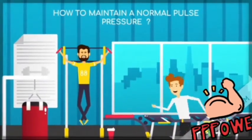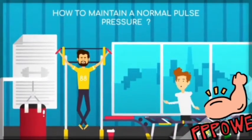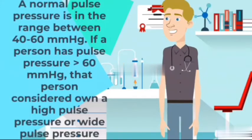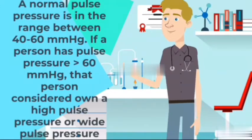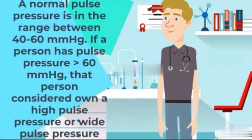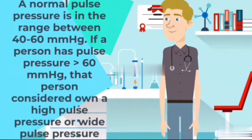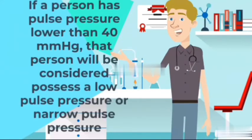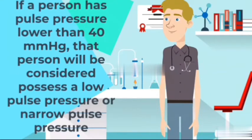How to maintain a normal pulse pressure. A normal pulse pressure is in the range between 40 mmHg and 60 mmHg. If a person has a pulse pressure higher than 60 mmHg, that person will be considered to have high or wide pulse pressure. On the other hand, if a person has a pulse pressure lower than 40 mmHg, that person will be considered to have a low or narrow pulse pressure.